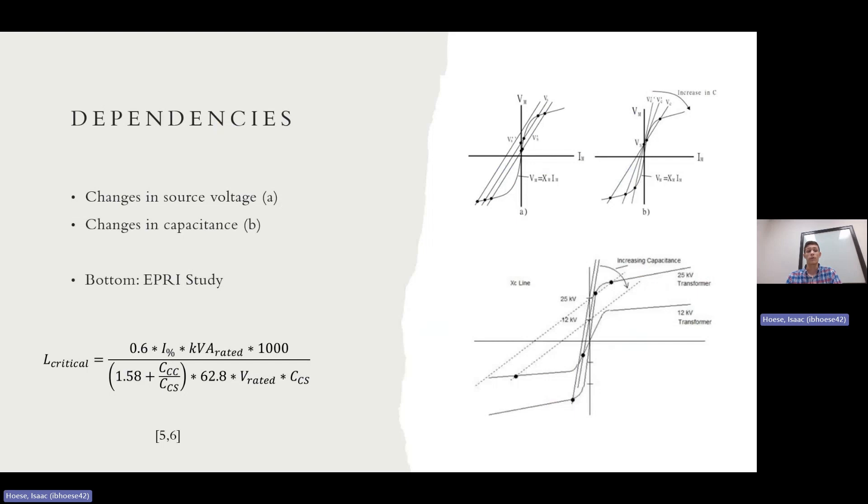So if you know all those values, which you should, you can get the critical length of your underground cable. And once you reach that length, that critical length, you're in the threshold for ferroresonance to begin.